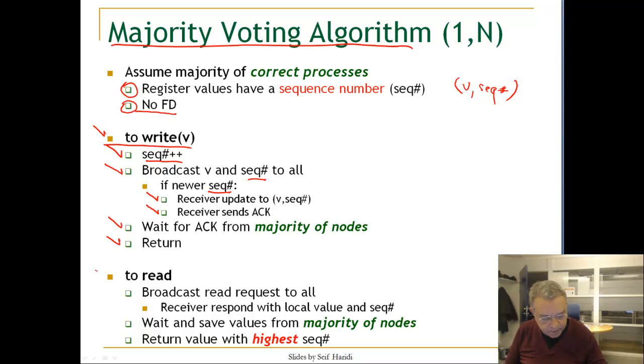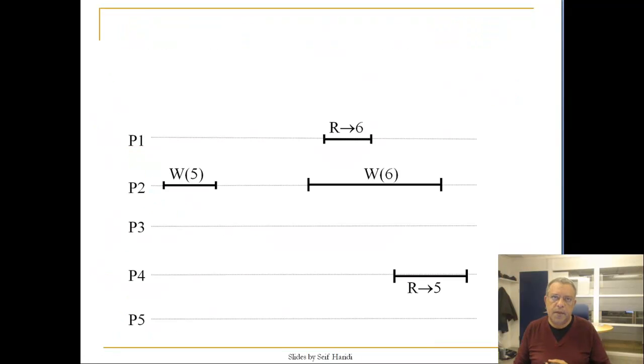Now, let us look at one of the readers. What does he do? He broadcasts a read request to all. Receiver responds with the local value and the sequence number. The requesting reader waits and saves the values from a majority of nodes, and then picks the one with the highest sequence number. Let us see if this algorithm is correct. There is actually some problem with this that we can see right now. The algorithm that we just described admits this execution.